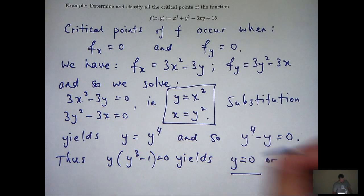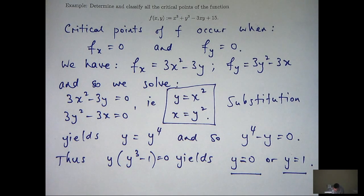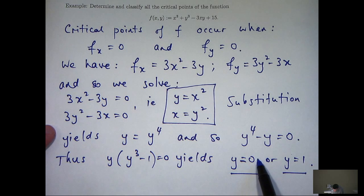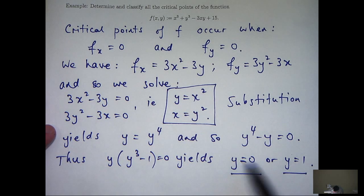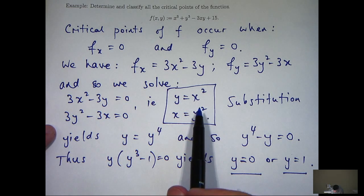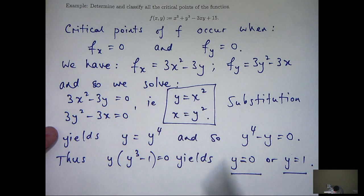So either y is zero or y cubed minus one is zero. In both those cases I'll get the following. So I get two values, possible values for y. What we're going to do now is calculate the corresponding x components associated with each of these y's. I can just take y equals zero, sub it in here, and I'll get x equals zero.